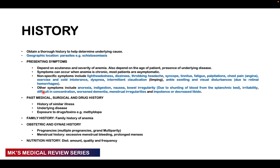You also want to review past medical, surgical, and drug history — any history of similar illness, underlying diseases, exposure to drugs and toxins such as methyldopa, and family history of anemia. In females, take an obstetric and gynecological history — multiple pregnancies, grand multiparity, menstrual history, excessive menstrual bleeding, post-menopausal bleeding (which could indicate cervical carcinoma). Take a nutritional history: the amount, quality, and frequency of meals.